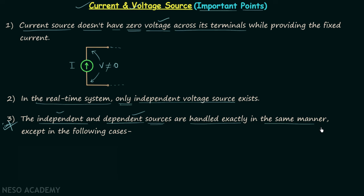But there are some exceptions, and the exceptions are superposition theorem, Thevenin's theorem, and Norton's theorem. Whenever you try to use these three theorems to simplify your network, you have to deal with independent and dependent sources in different manner.